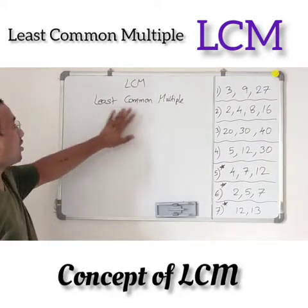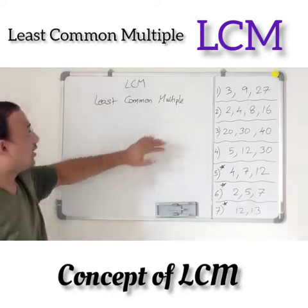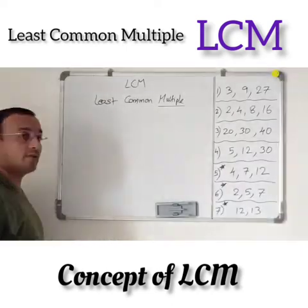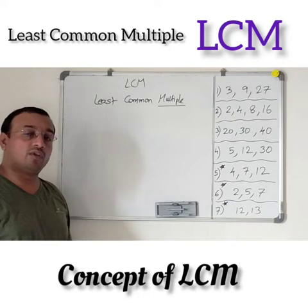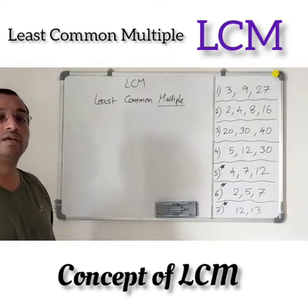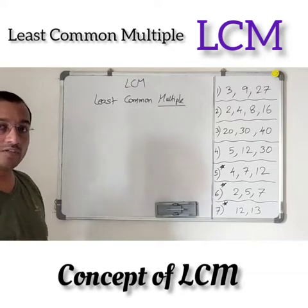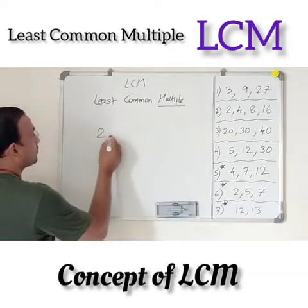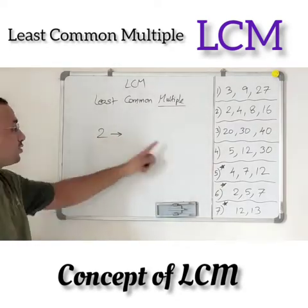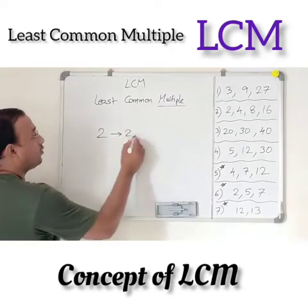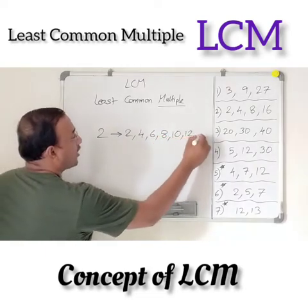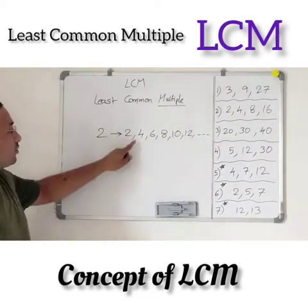LCM is nothing but Least Common Multiple. Let's start our discussion from a multiple. A multiple is nothing but the product we get when we multiply the given number with 1, 2, 3, 4 and so on. For example, if we take 2 — the multiples of 2 are: 2, 4, 6, 8, 10, 12 and so on. These are nothing but the multiples.